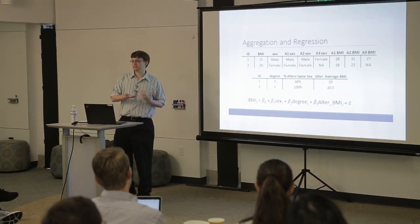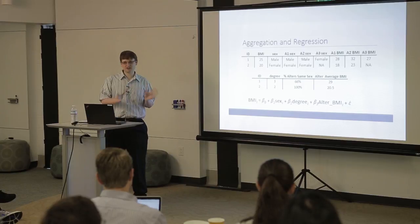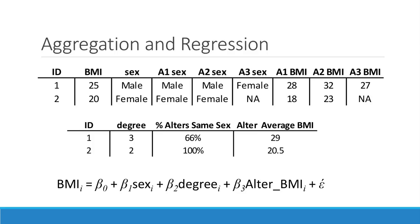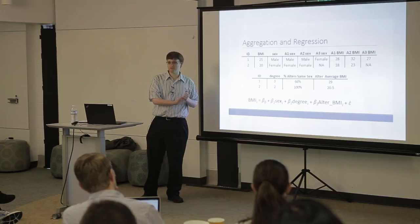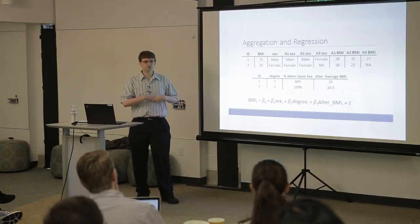How do you use this information to do basic regression models? Very basic regression models with ego networks are surprisingly straightforward. A common approach is to aggregate your alters' traits in some way. For the first person in your survey, if two of their friends are the same sex and the third friend is a different sex, you might create a new variable: percent of alters who are the same sex. For BMI, you could simply take the mean. This is a common strategy for aggregating data and then using some sort of regression.